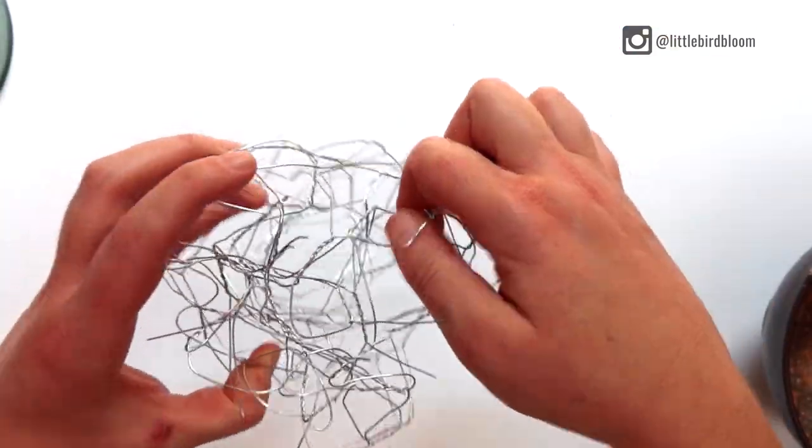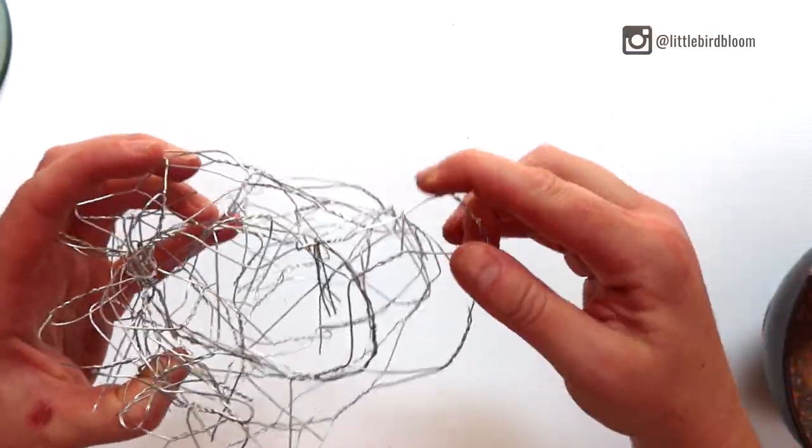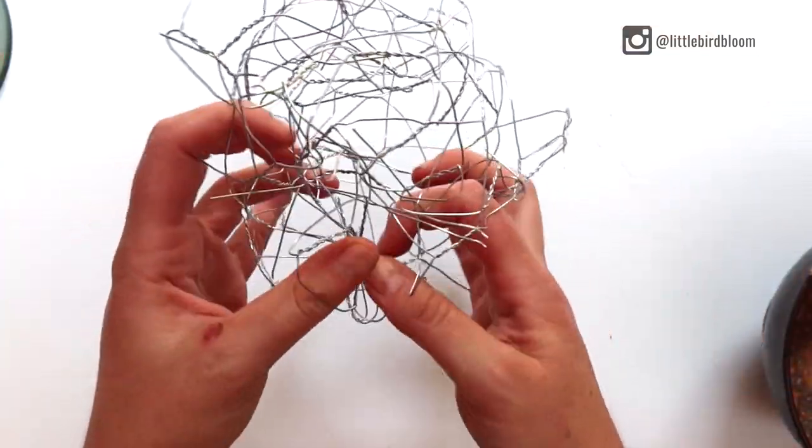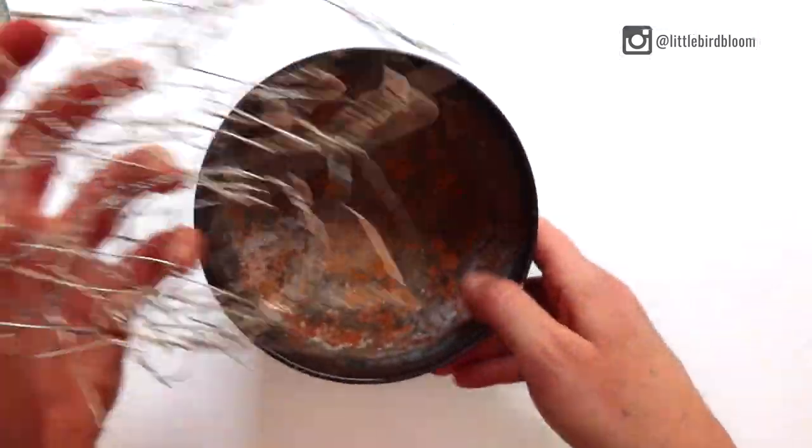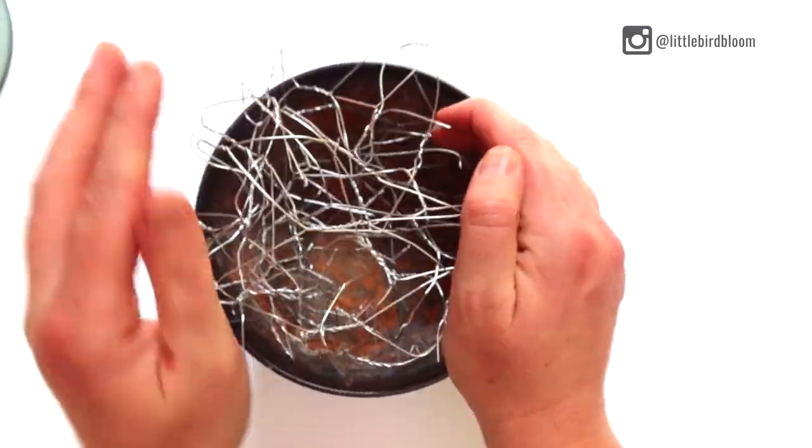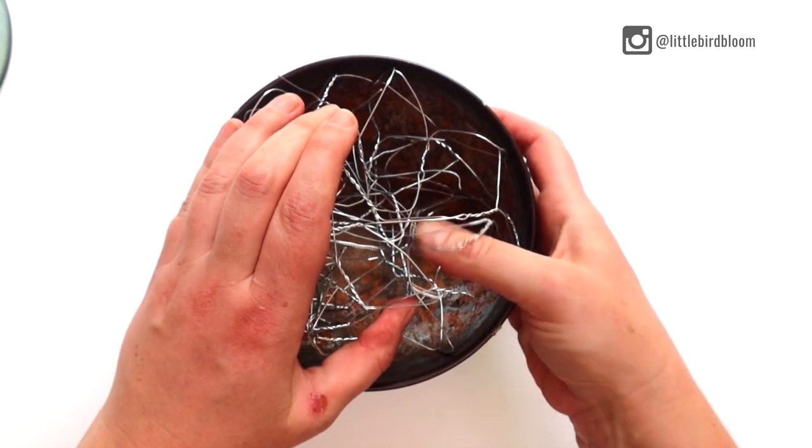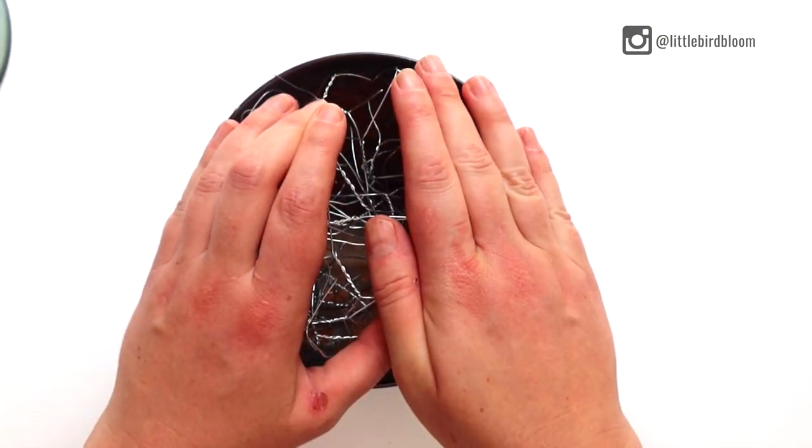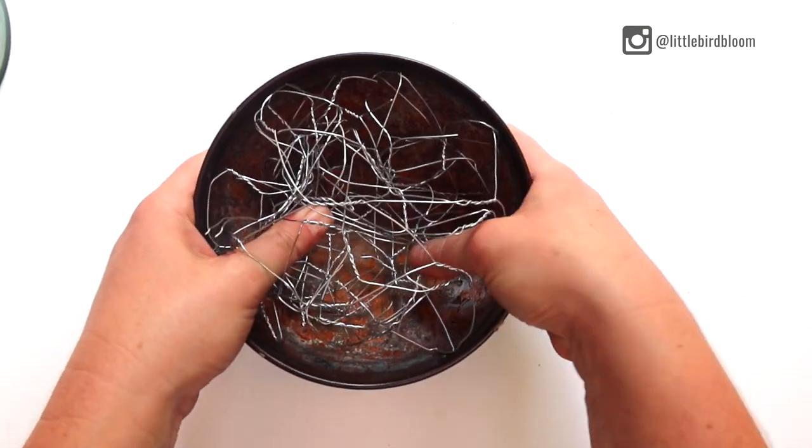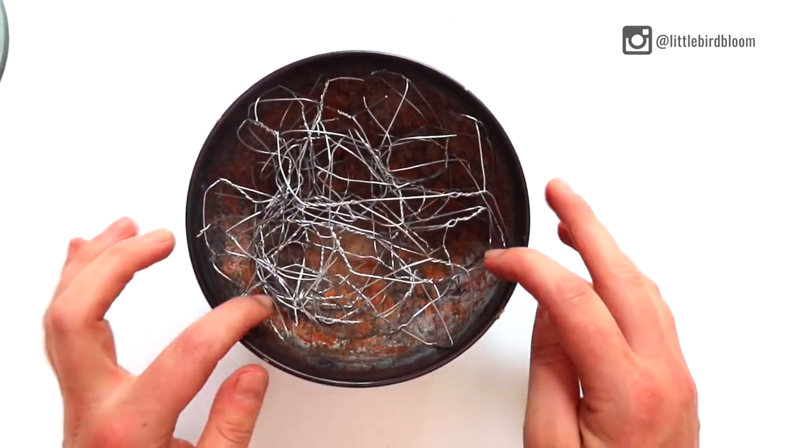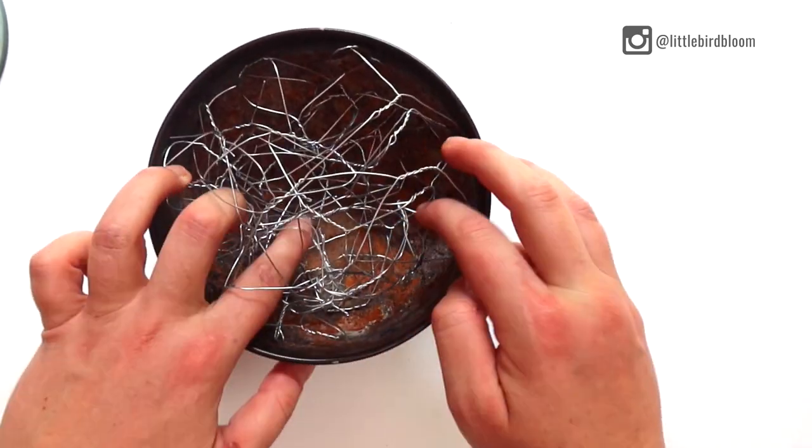Be careful of these loose bits because they can be quite sharp. And I know that looks like a complete hot mess, but you'll put it in your container and instead of shoving it all the way down, get your fingers in there and push some of the layers down, because you don't want to completely deflate your chicken wire.